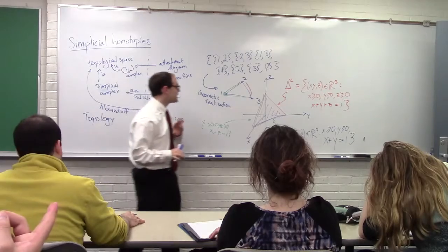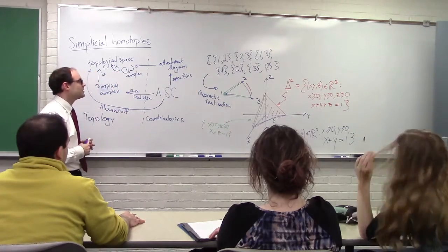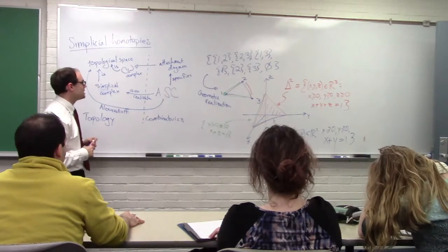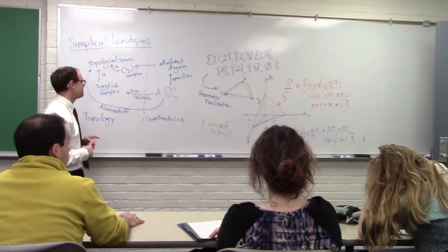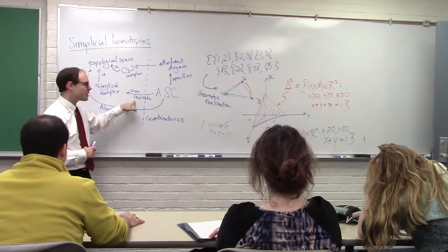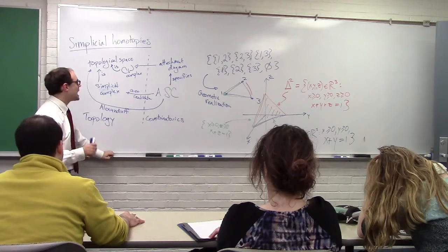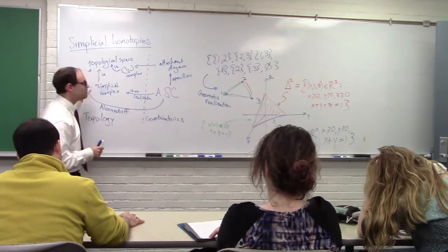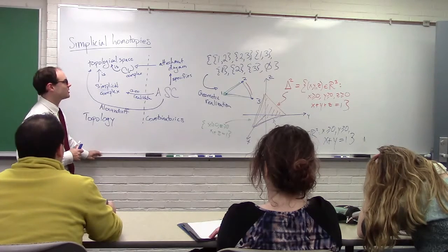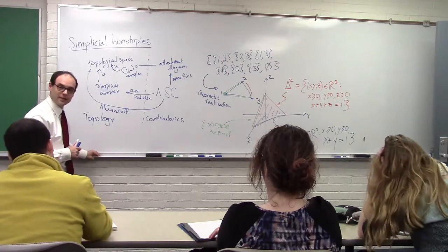The point is that everything happens on the level of the simplicial complex, which is very nice. The difficulty with the Alexandrov topology is that people like to actually draw pictures, and it's a little hard to draw pictures. You tend to think of them in terms of partial orders. It's one that I'm not entirely sold on as being the right way to open the theory.